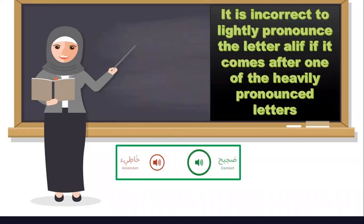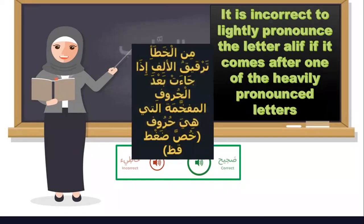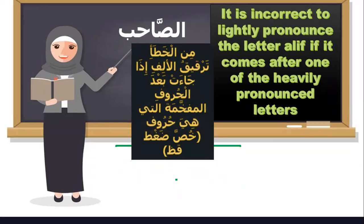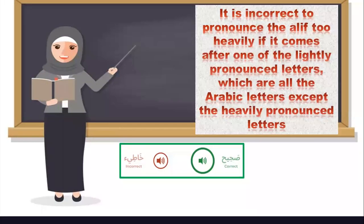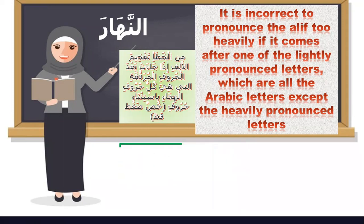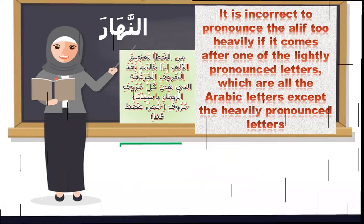It is also incorrect to lightly pronounce the letter alif when it becomes part of a heavily pronounced region. Like 'o-so-hibu' — the right is 'o-so-hibu,' the wrong is 'o-so-hibu' with a lighter sound. Furthermore, it is incorrect to pronounce alif too heavily if it comes after one of the lightly pronounced letters — which are all Arabic letters except the heavily pronounced ones. The right pronunciation is 'an-nahar'; the wrong is 'an-nahar' with heavy emphasis.